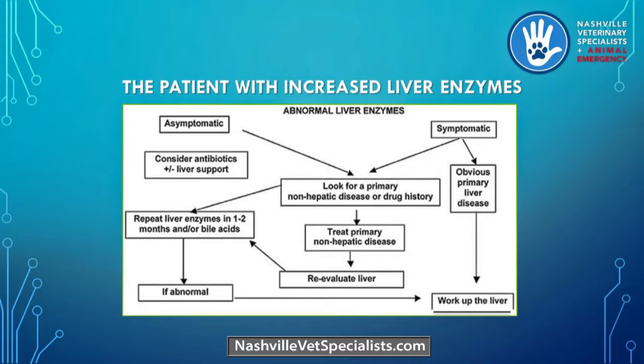If liver enzymes aren't where you want them after initial treatment and the dog is non-jaundiced, this is where we should run a fasting bile acid. Greater than 25 on your fasting bile acid with chronic elevation of enzymes — especially ALT — is what we need at a reasonable price to start doing more advanced diagnostics, whether imaging or all the way up to biopsy.